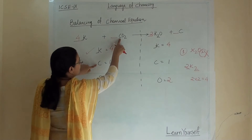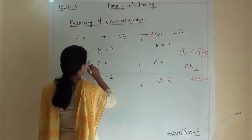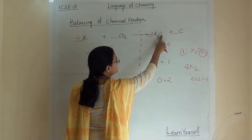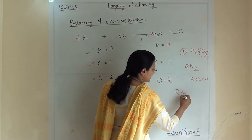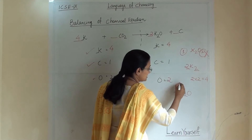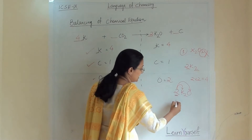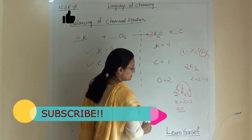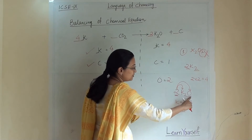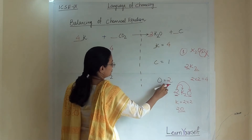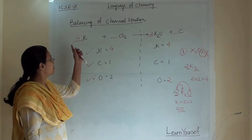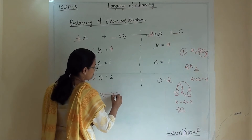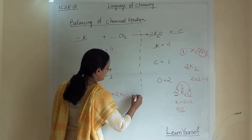Carbon is 1 on both sides so it is already balanced. For oxygen: we have 2 in front of K2O and K2O has 1 oxygen, so 2 × 1 = 2 oxygen on the product side, which matches. So our equation is fully balanced. The balanced equation is: 4K + CO2 → 2K2O + C.